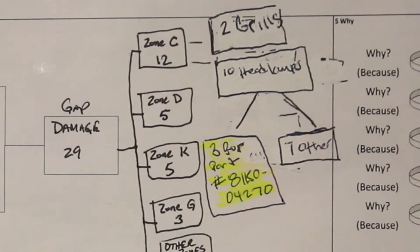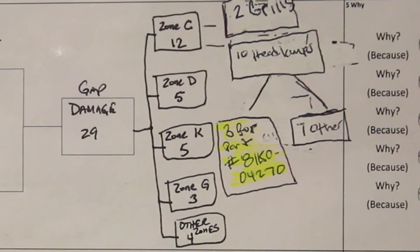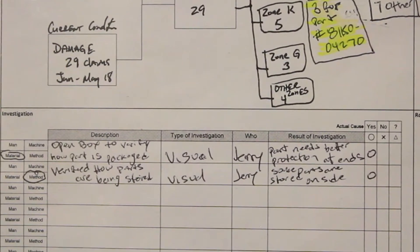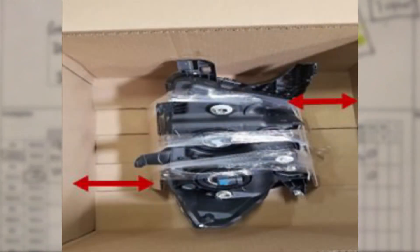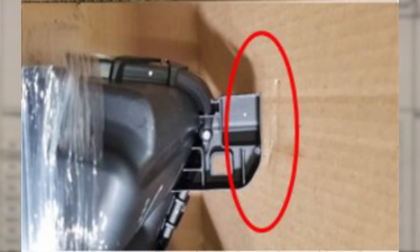We broke down our C zone damages by part commodity: two grills and 10 headlamps. Then we broke down the 10 headlamp damages by part number. That led us to part number 81150-04270, which made up 30% of our headlamp damages for Home Position D. As part of our investigation, we opened the headlamp boxes to verify how parts were packaged. We reached out to our field operations improvement manager to get the national damage report. We discovered that this part number was not only Home Position D's highest damage claim, but also all of the PDC's highest damage claim for headlamps. We discovered that parts needed better protection on the end — not enough protection was causing the part to move and get damaged. We submitted a PPR for the concern.